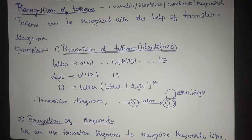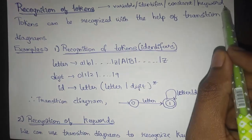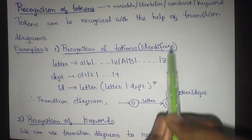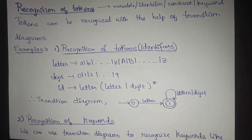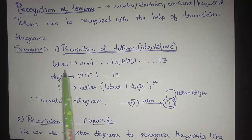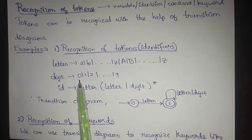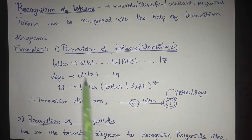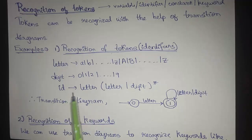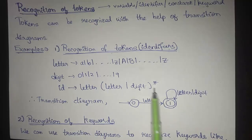We can recognize tokens in the form of pre-specified state transition diagram rules. I am going to give a few examples of those for identifying variables, identifiers, constants, and keywords as tokens. Recognition of identifiers can be done by assigning all lowercase and uppercase letters to the letter regular expression, all possible digits to digit, and defining id as a combination of letter followed by zero or more occurrences of letter or digit. This is going to be an identifier.